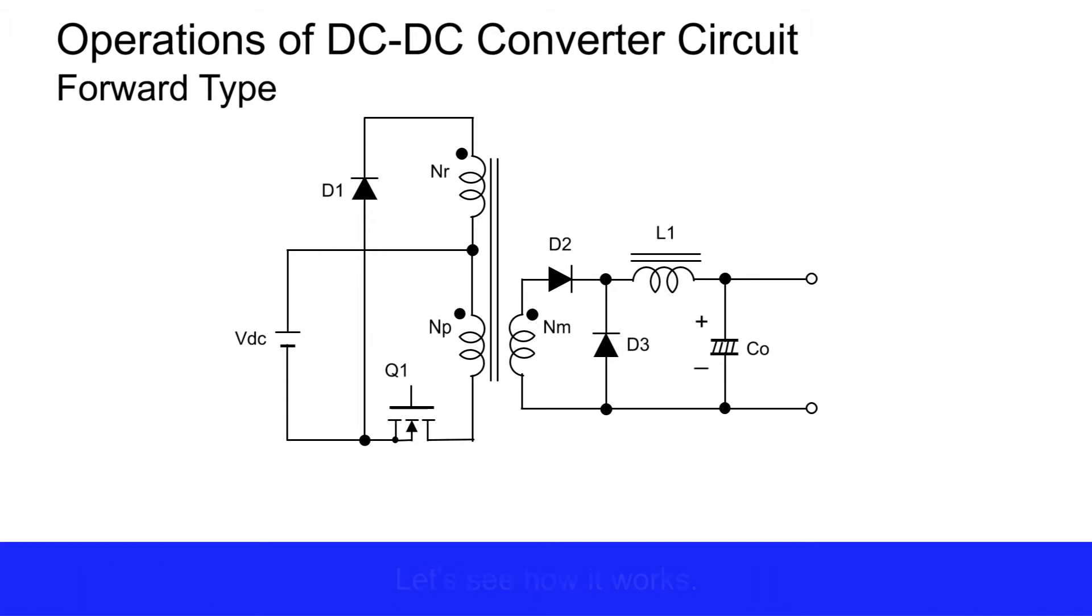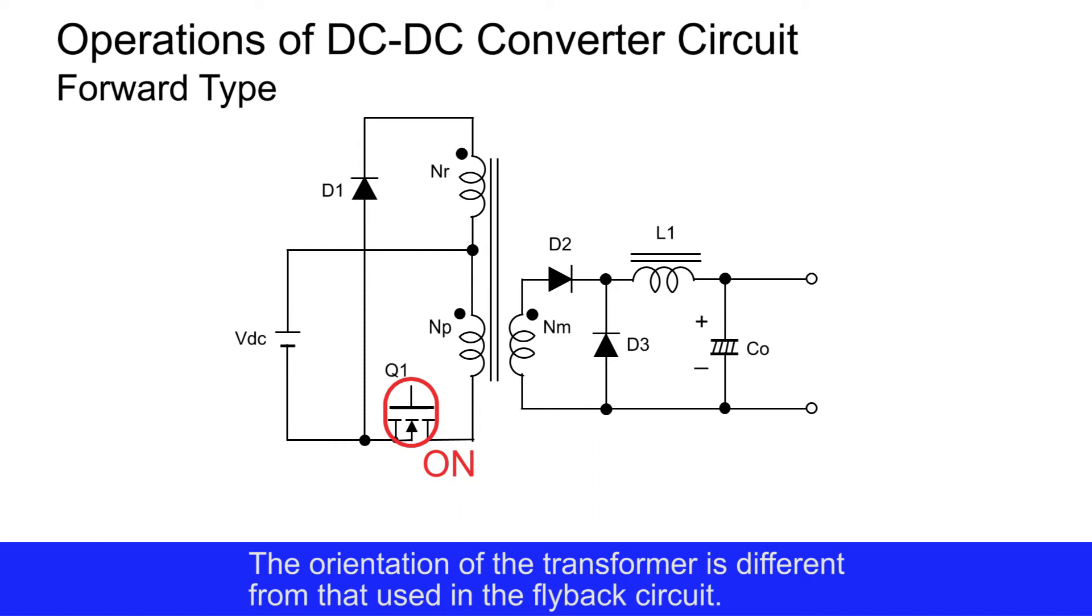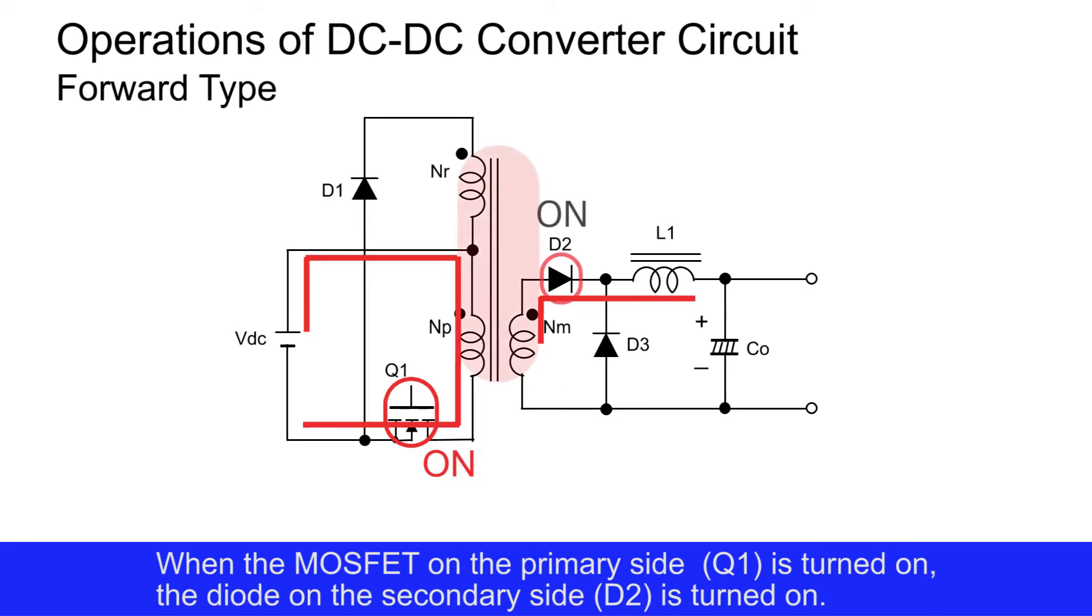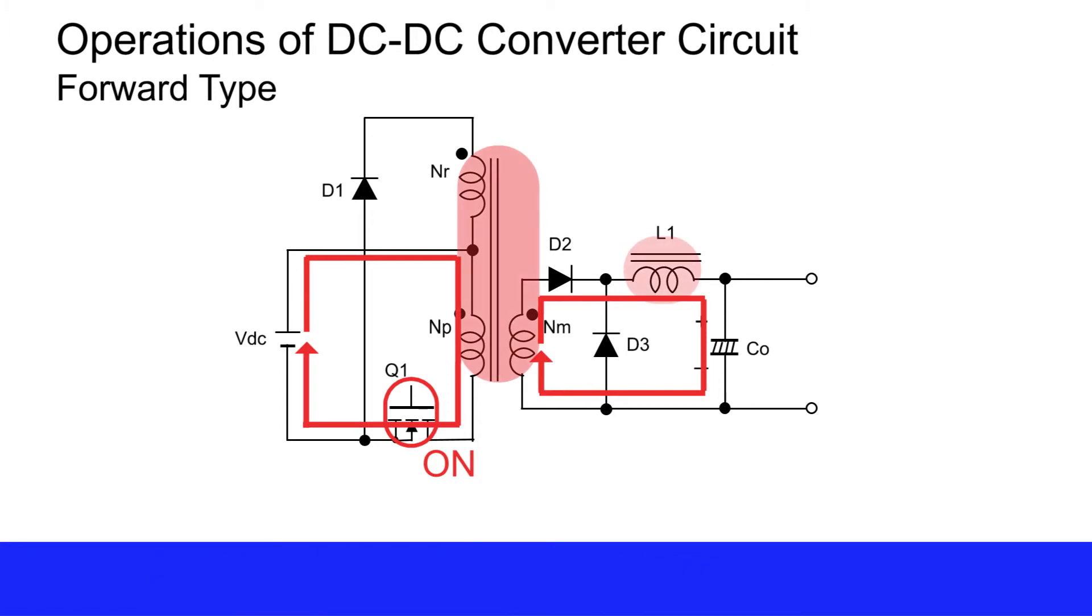Let's see how it works. The orientation of the transformer is different from that used in the flyback circuit. When the MOS FET on the primary side is turned on, the diode on the secondary side is turned on. The capacitor is charged through the choke coil.